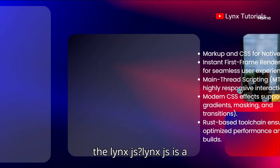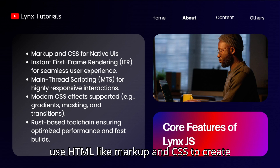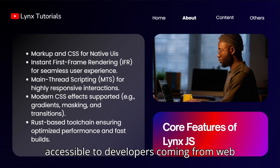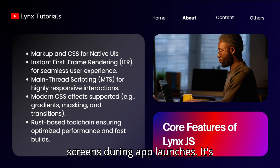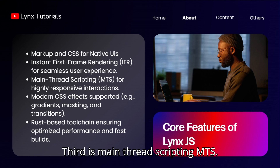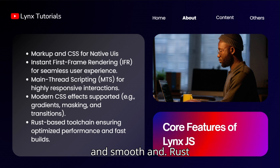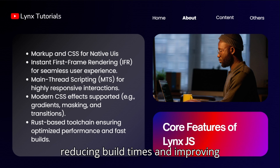So what are the core features of links.js? Links.js is a powerhouse of advanced features. First is markup and CSS for native UIs — you can use HTML-like markup and CSS to create native UIs, leveraging modern CSS features like gradients, transitions, and masking. These features are accessible to developers coming from web backgrounds. Next is instant first-time rendering. With IFR, links ensures a seamless user experience by eliminating blank screens during app launches; it momentarily blocks the main thread to render the first frame completely. Third is main thread scripting, which prioritizes high-priority UI tasks such as handling user gestures, keeping the application highly responsive and smooth. And the Rust-based toolchain — by using Rust for its compilation process, links offers both memory safety and speed, significantly reducing build times and improving runtime performance.